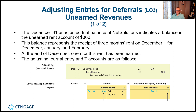We need an adjusting entry to record this deferred revenue. When the tenant paid on December 1st, it created unearned revenue — a liability for us. We need to reduce that liability and recognize the revenue. The adjusting entry on December 31st: debit unearned rent (a liability) by $120 to reduce it, and credit rent revenue (a revenue account) by $120. We only take one-third of $360 because only December has been earned so far.